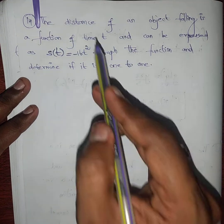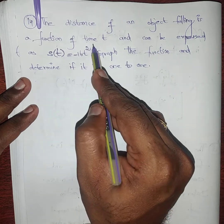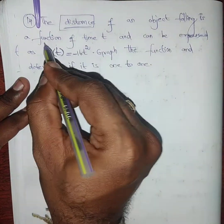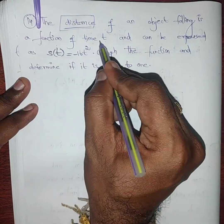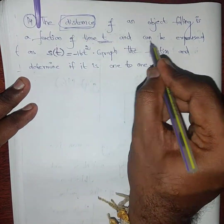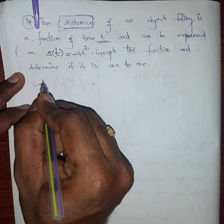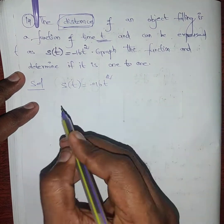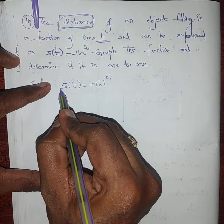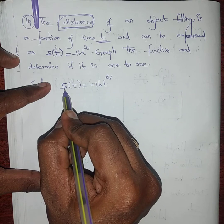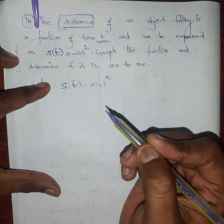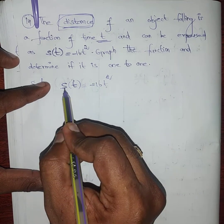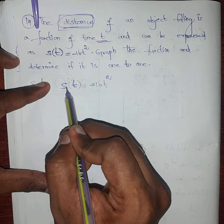Problem 14: s(t) = -16t². The distance of an object falling is a function of time t. Distance s and time t can be expressed as s(t) = -16t². Here, t is the independent variable and s is the dependent variable — the distance depends on t.